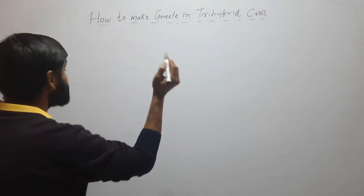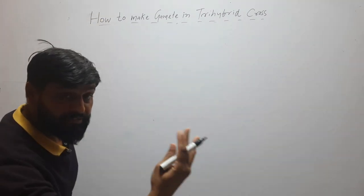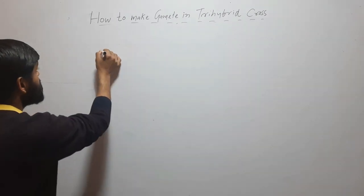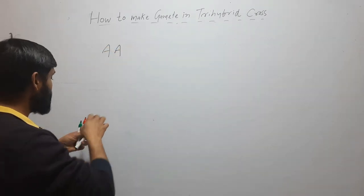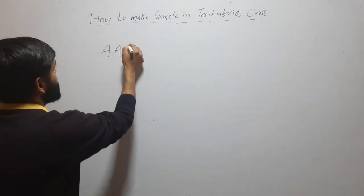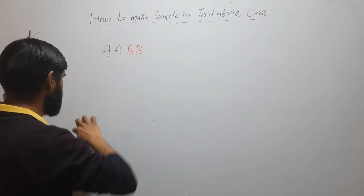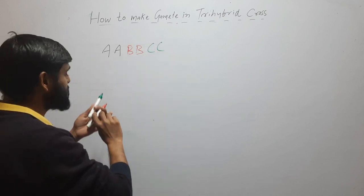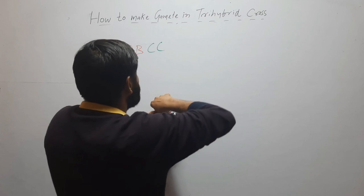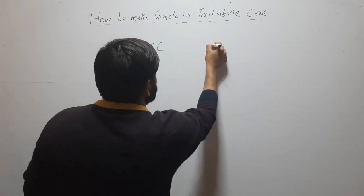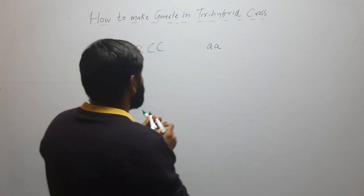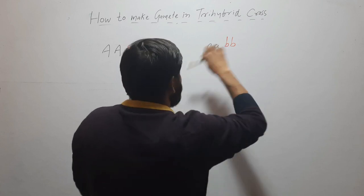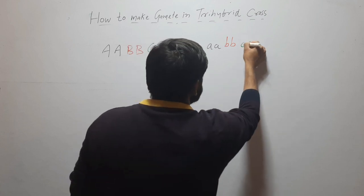Here I am taking 3 different traits and each trait has 2 alleles. I am taking capital A, capital A, capital B, capital B, capital C, capital C. And I am crossing these with the recessive ones: small a, small a, small b, small b, and small c, small c.